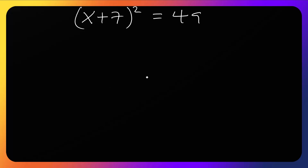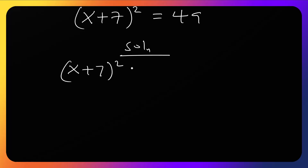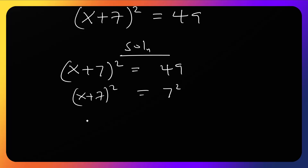How do you solve for x here? We have (x + 7) squared equals 49. Now, instead of leaving it as is — this side is 2 — I want to make this side 7 squared. So we rewrite: (x + 7) squared minus 7 squared equals zero.